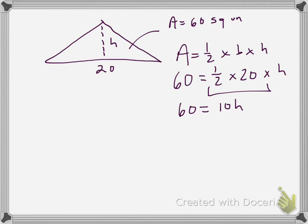And again, I want to isolate that variable. So I'll divide by the coefficient, that 10. And I need to do the same thing to the other side. These will cancel, leaving me with just h on this side. And 60 divided by 10 is 6. So the height of this triangle is 6.